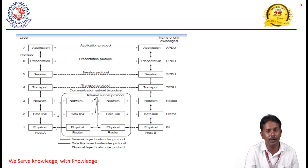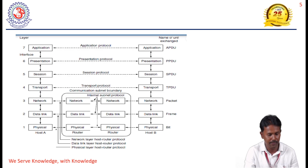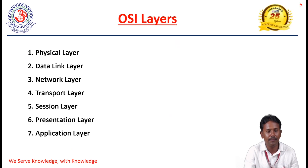From the transport layer, the next layer is the session layer. In the session layer, the presentation layer, and the application layer, the data is in the form of messages. These are all the OSI layers.